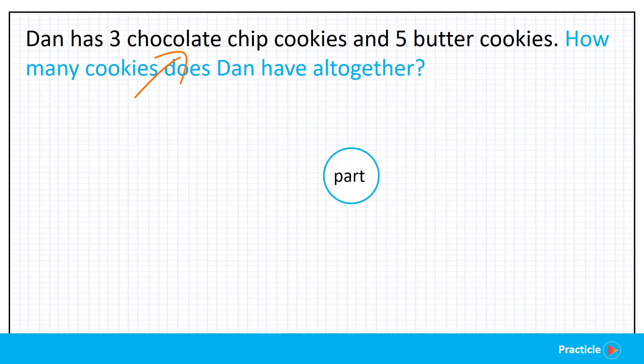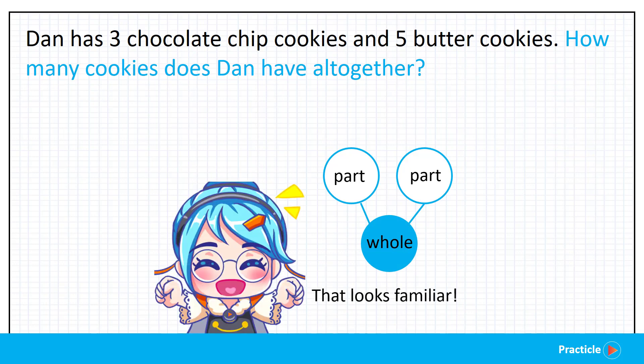Now, because the chocolate chip cookies make up a part of all our cookies, and the butter cookies make up the other part of our cookies, we can put these 2 parts together to form a whole. Not the hole in your pocket, but the whole that refers to everything that Dan has. And that's where the part-part-whole model comes in.